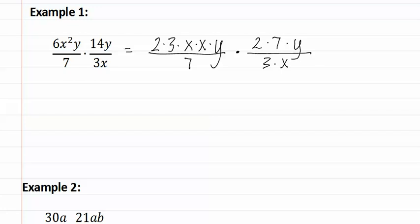Let's see if there are any common factors in both the numerator and the denominator. I see that they both have a three. They also both have an x, and they both have a seven. I have gotten rid of all of the factors that are similar. I now have two times two, which equals four, and x, a y, and a y, which is x y to the second.